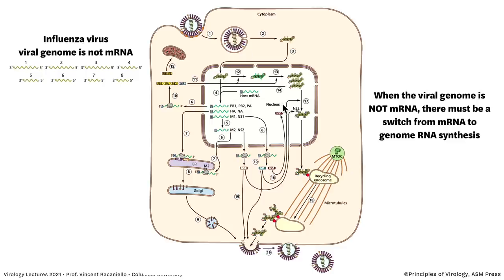That is a unimolecular negative-strand RNA genome. Now influenza virus is also a negative-strand RNA virus, but the genome is in pieces — it's segmented. Again, when the genome is not mRNA, there has to be a switch from mRNA to genome synthesis. The RNPs enter the nucleus in influenza, are copied to make mRNAs, mRNAs go out to the cytoplasm to be translated, making viral proteins. Then the viral RNAs have to be copied to make more negative strands, going through a plus-strand intermediate.